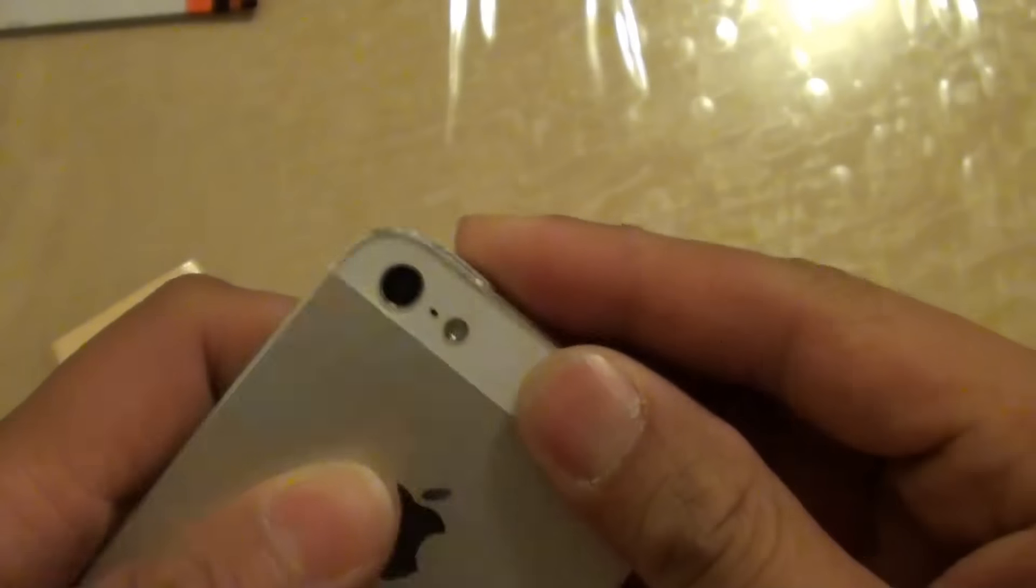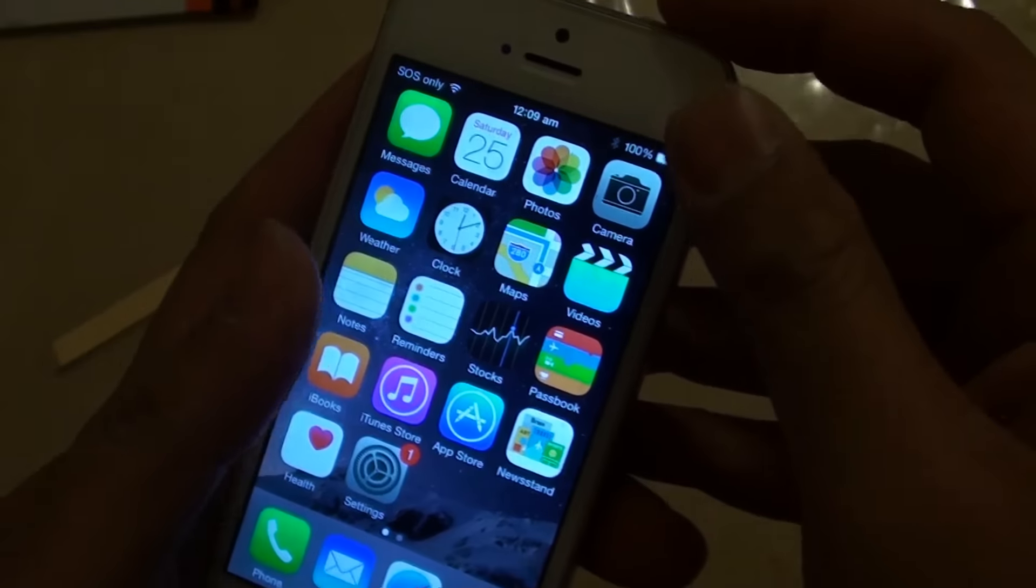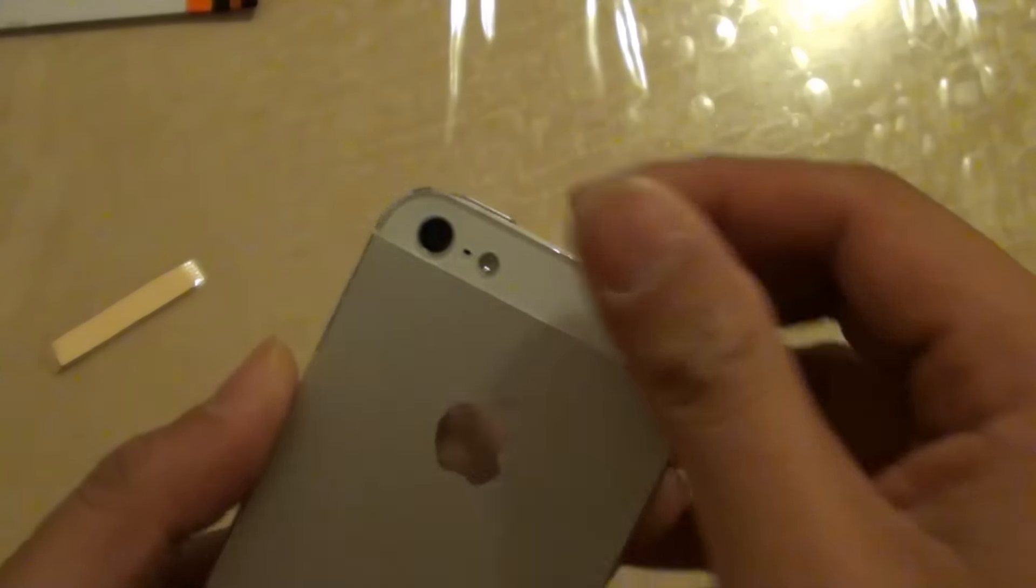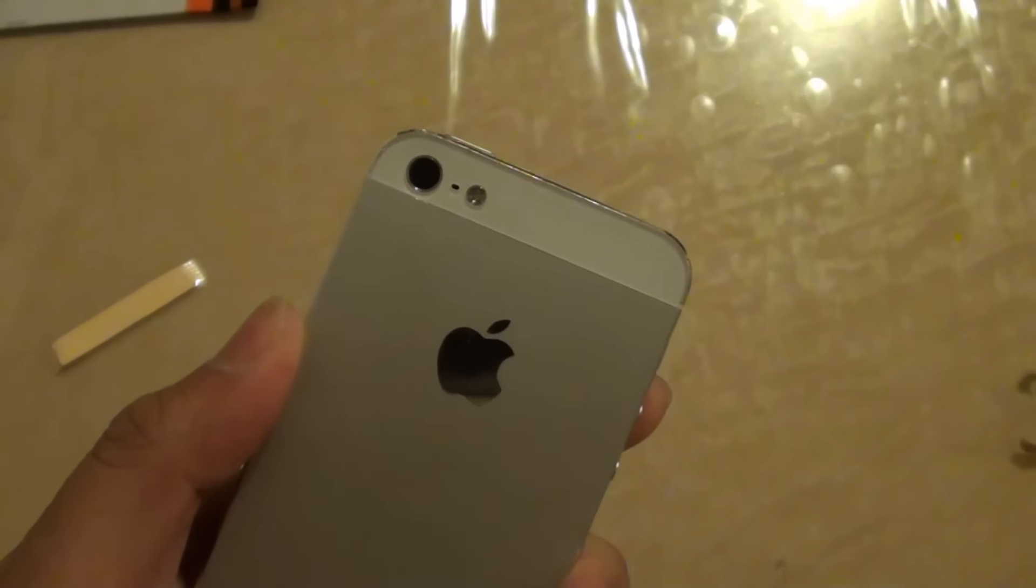That's all you have to do. You can try to turn on your phone and then check your phone to see if everything works fine. That's it - that's how you can replace the back glass on your iPhone 5. Thank you for watching this video.